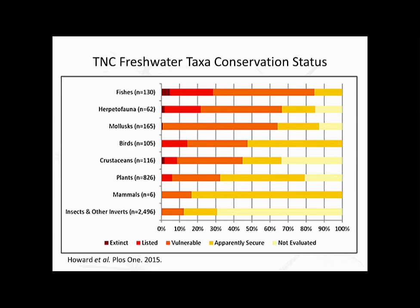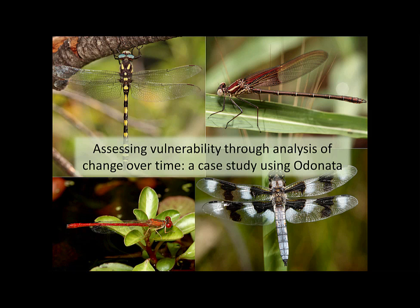This slide from the Nature Conservancy effort to document freshwater biodiversity throughout California shows a data gap they found as well for insects and other invertebrates — 70% of this group has not been evaluated. Now I want to get into some work that I did with Odonates and how we might assess vulnerability through an analysis of change over time.